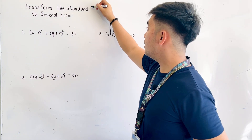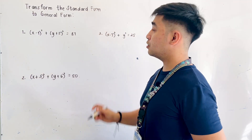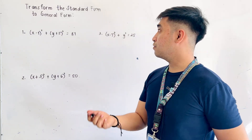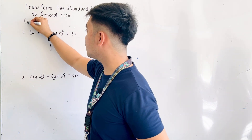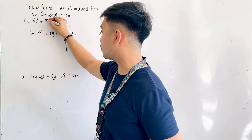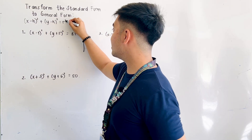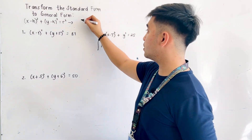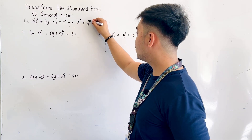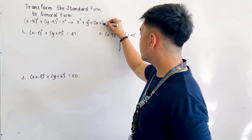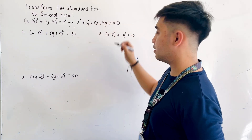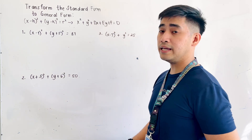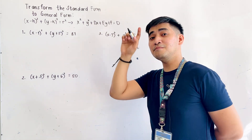For today, we will transform the standard form of the circle into its general form. But before we do that, let us first write down the equation for the standard form of the circle: (x minus h) squared plus (y minus k) squared equals r squared. We need to transform this into the general form: x squared plus y squared plus dx plus ey plus f equals zero, where d is the coefficient of x, e is the coefficient of y, and f is the constant, and the right side must equal zero.